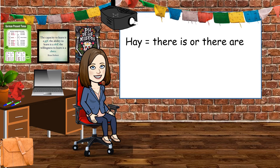If you want to say 'there is' or 'there are' something, you need the word hay — that's a strange pronunciation for us looking at H-A-Y, but that's hay. If you want to say 'there isn't' something, you just need to put a little 'no' in front of it: no hay — there isn't.